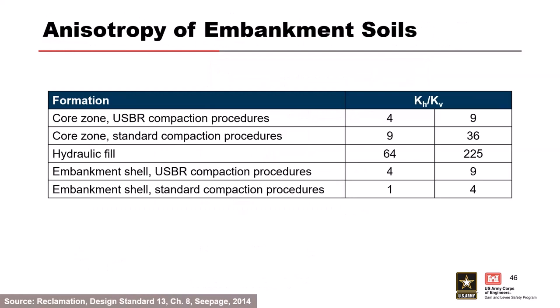The anisotropy of embankment soils has much tighter bands than natural soils. Reclamation also compiled an evaluation of that for core materials using standard and USBR compaction procedures. You can see that anisotropy decreases. Hydraulic fill dams — we have a few still in inventory — can have pretty great anisotropy because we're depositing in a layered system, and in hydraulic deposition that layering is even more apparent. Reclamation did the same for embankment shells.